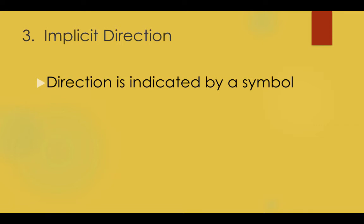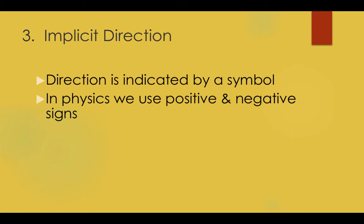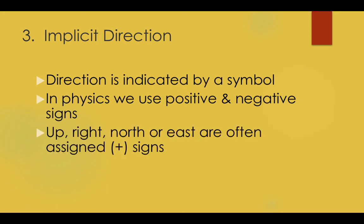We can use any sign and its opposite to represent the two directions. We could use a smiley face for north and a sad face for south. In physics, we use a plus and minus sign to represent the two directions. Up, right, north, and east are often assigned a positive sign.